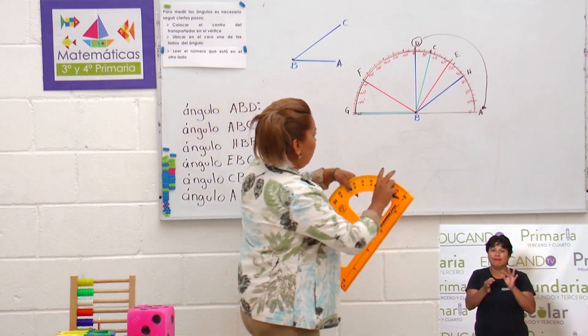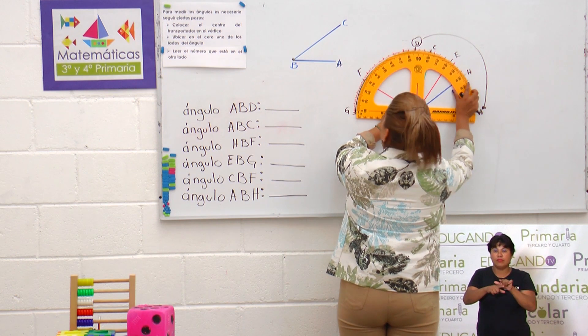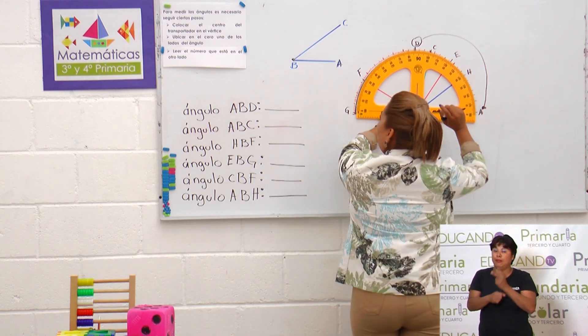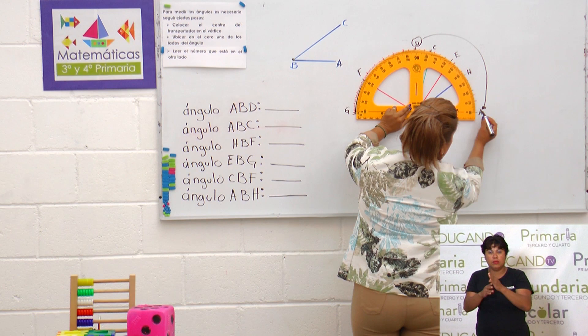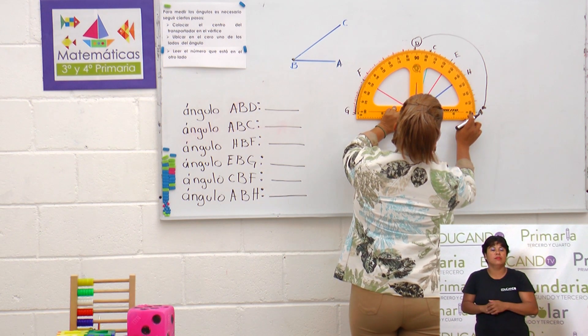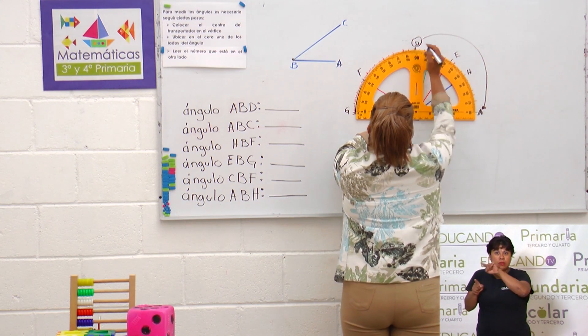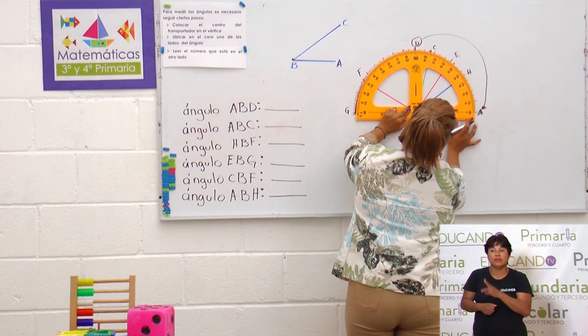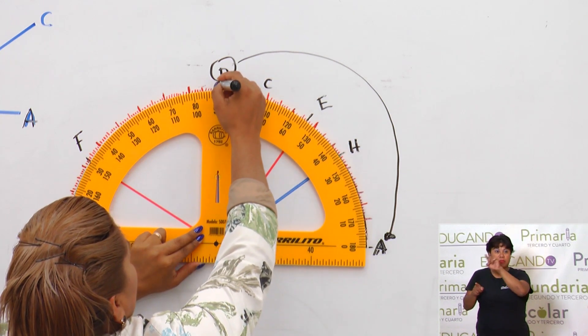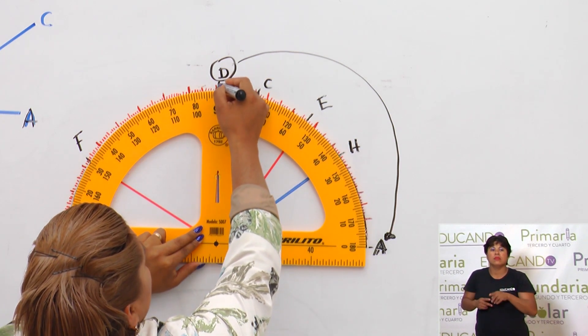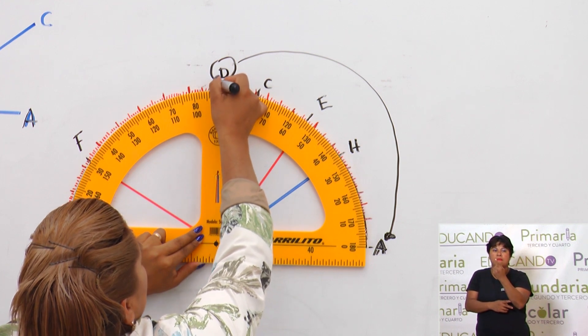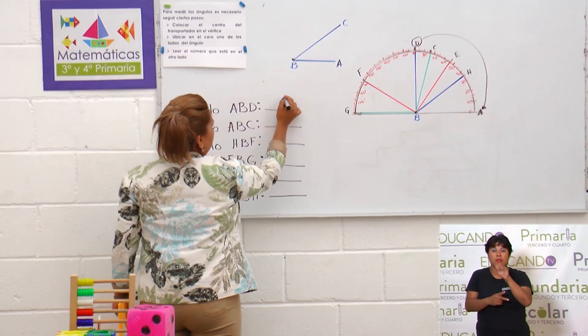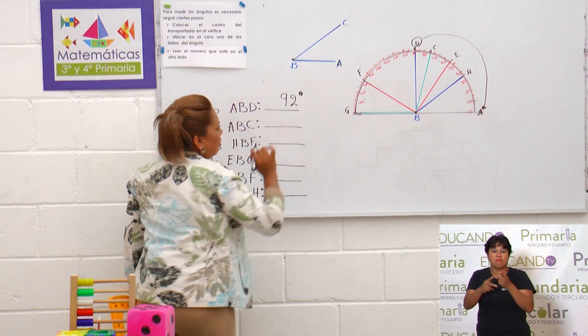Muy bien. Si me piden a mí medir el ángulo A B D, voy a seguir los tres pasos que ya te leí al principio. Primero, ubico el transportador. Dice: colocar el centro del transportador en el vértice. Segundo paso: ubicar en el cero uno de los ángulos. Aquí está. Voy a ubicar el ángulo A. Y luego, leer qué número está en el otro ángulo. Y observa, aquí nosotros tenemos un ángulo de, si lo estamos ubicando del cero hacia acá, tenemos un ángulo de noventa y un, noventa y dos grados. Quiere decir que el ángulo A B D mide noventa y dos grados.